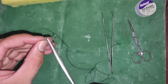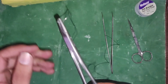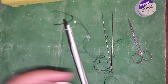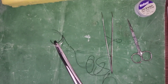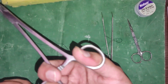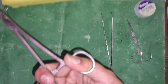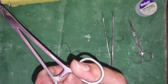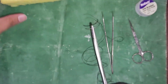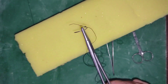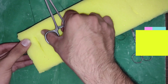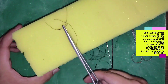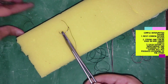An important point to remember: the needle should be held at approximately one third distance from the eye, and two thirds from the needle point. Now let's begin with the first suture, which is the simple interrupted suture.